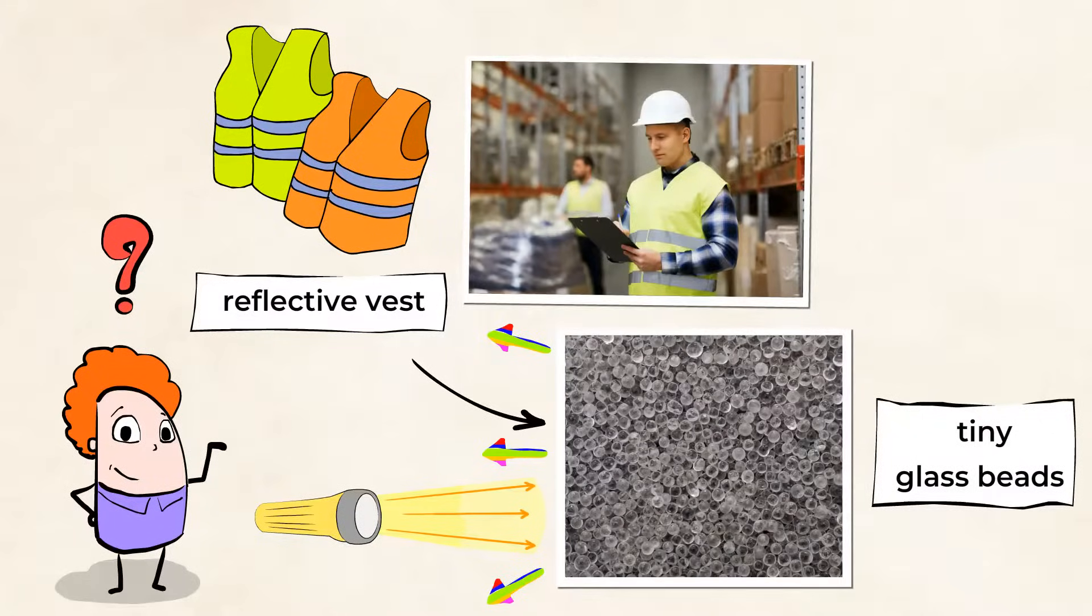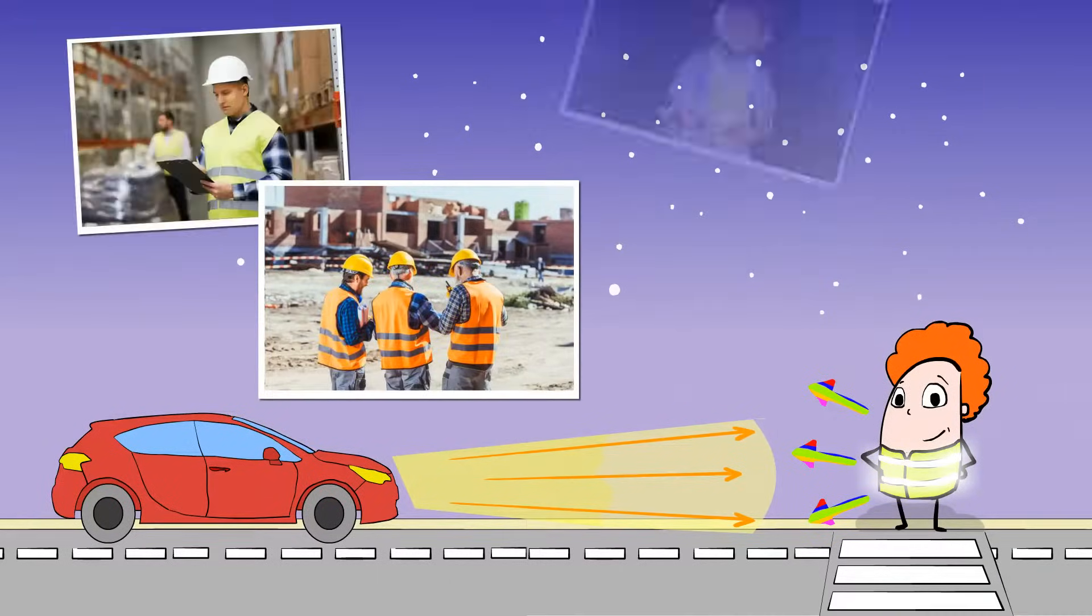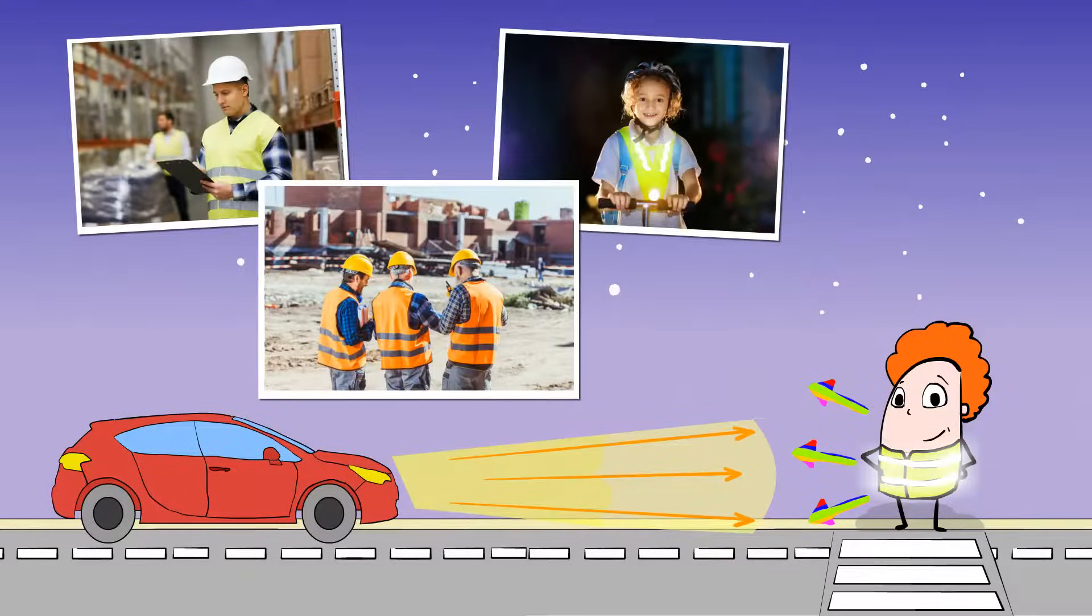When light is shined on them, like the light from a passing car, it's reflected. And these reflective vests are used for safety on many construction sites and other work zones. The light that's reflected back to our eyes makes the workers more visible, even at night.